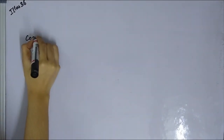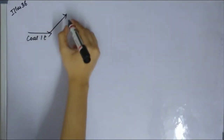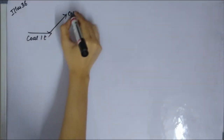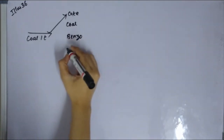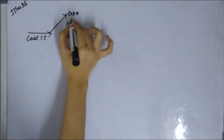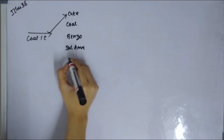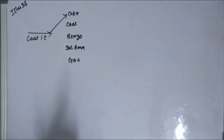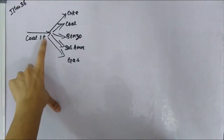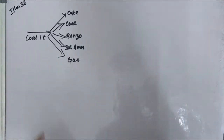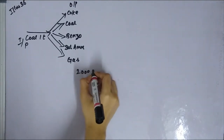We are going to prepare a joint cost table. We will take 1 ton of coal as input. The outputs are: coke, coal tar, benzol, sulphate of ammonia, and gas. The total output is 2000 pounds.